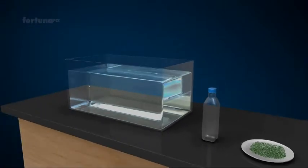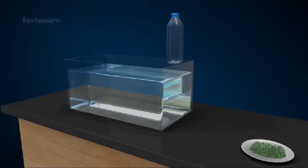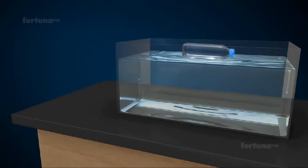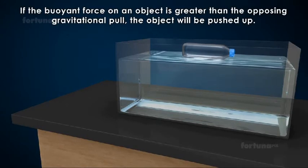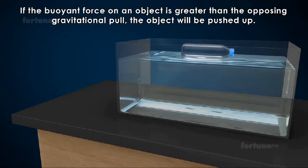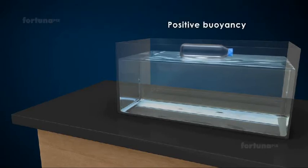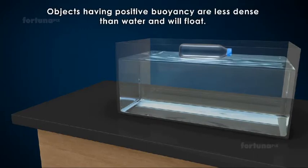First, screw the cap on the empty bottle and leave it in the water. You'll see that the bottle floats horizontally. If the buoyant force on an object is greater than the opposing gravitational pull, the object will be pushed up. This is what's known as positive buoyancy. Objects having positive buoyancy are less dense than water and will float.